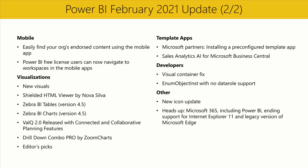In the mobile section, you can now easily find your organization's endorsed content in the mobile application. Content that's been promoted or certified in the service is now tagged in the app with a badge — report creators promote their content to show it's ready for use, or certify it to show it's been approved by your organization. Additionally, Power BI free license users can now navigate to workspaces in the mobile apps. Previously, free license users could only access workspace content through the shared with me page; now they can view and access workspaces for which they've been added as viewers directly from the workspaces list.